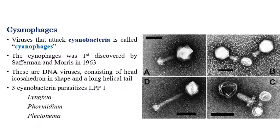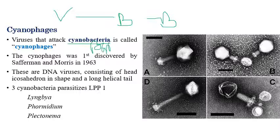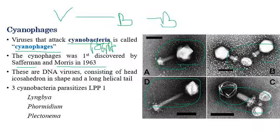The second type is cyanophages. While bacteriophages are viruses that infect bacteria, cyanophages are viruses that infect cyanobacteria or blue-green algae. They were first discovered by Safferman and Morris in 1963. These are also DNA viruses consisting of a head icosahedral in shape with a long tail. Three cyanobacteria parasitized are Limba, Formidium, and Plectonema — their first letters indicating the name LPP1.